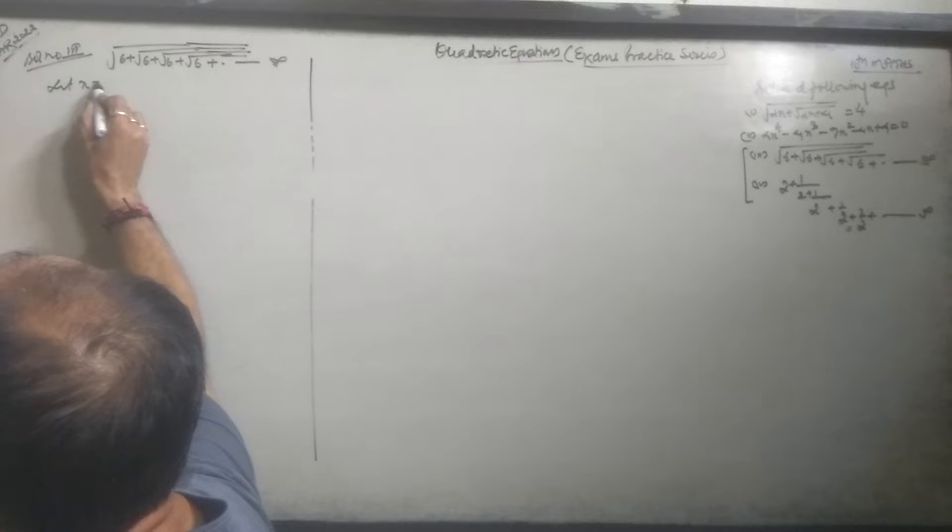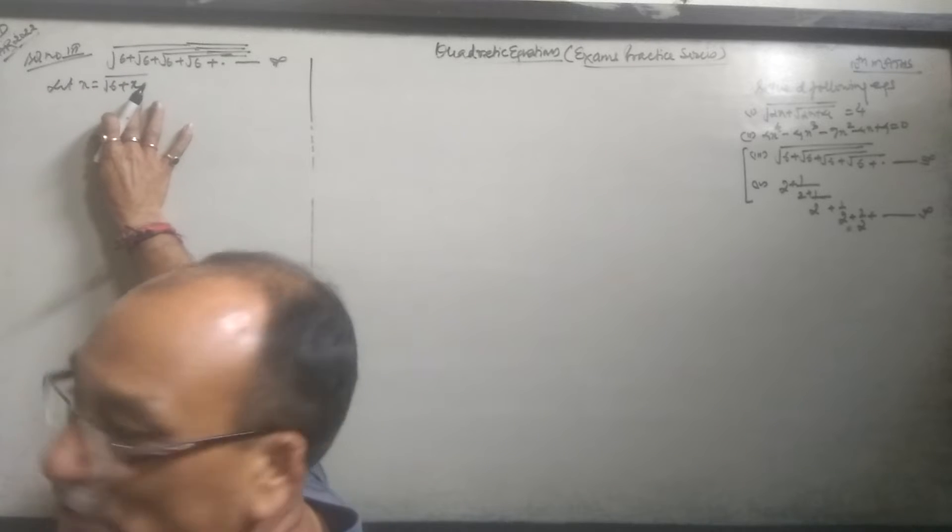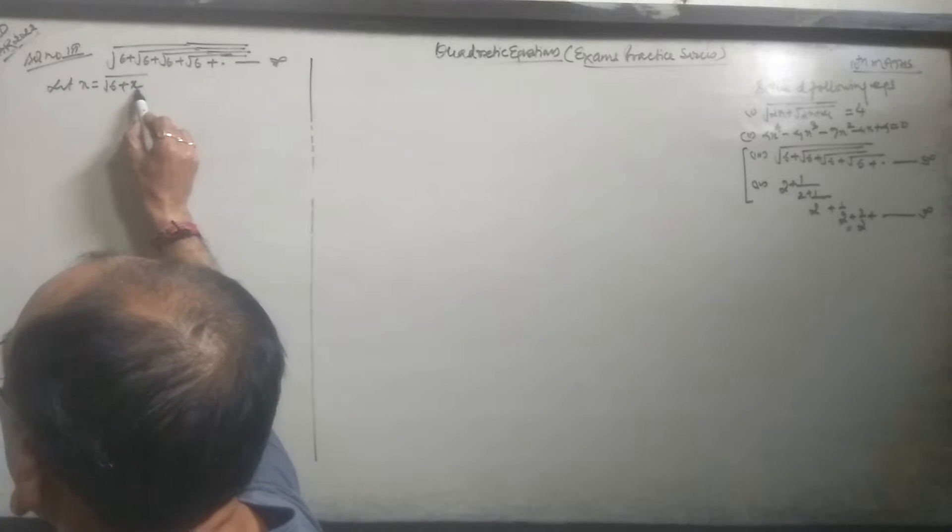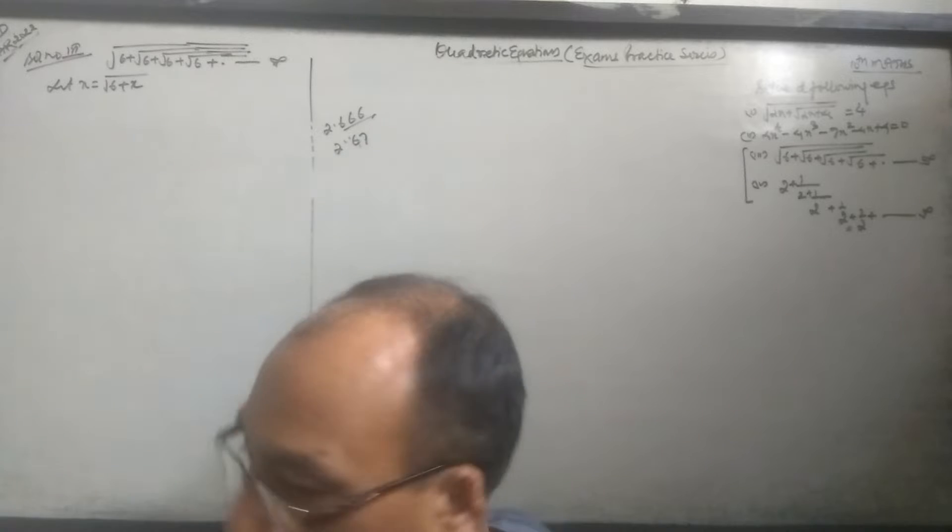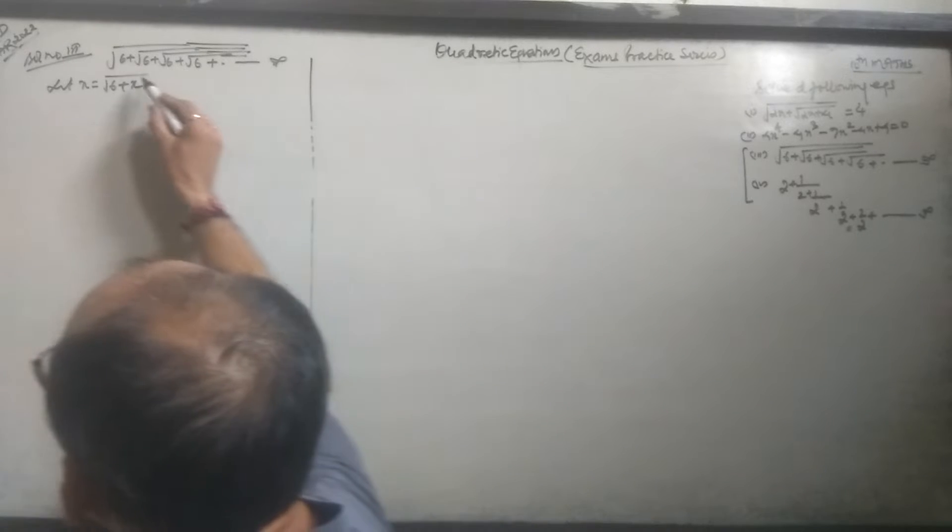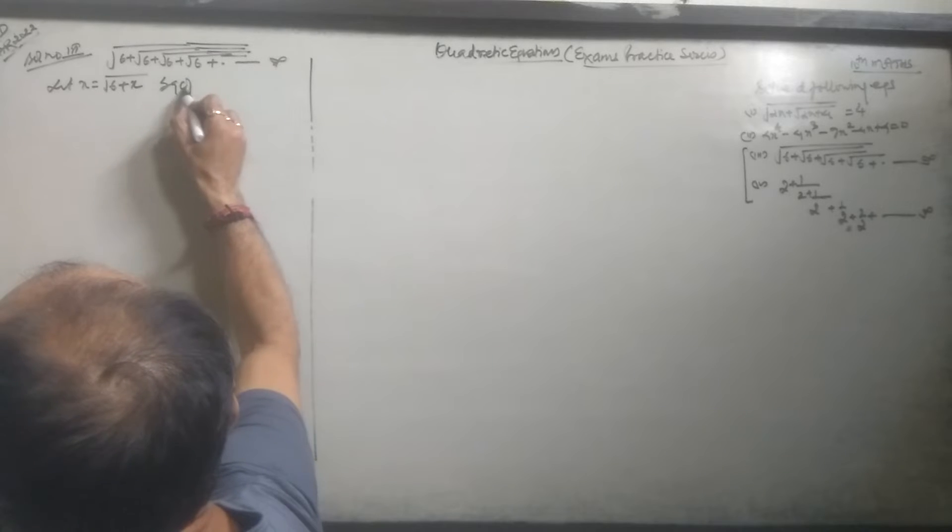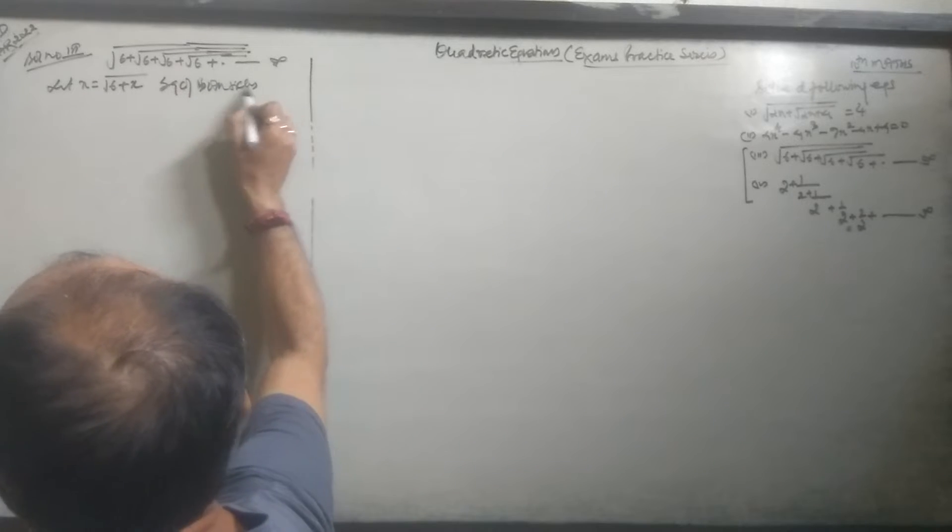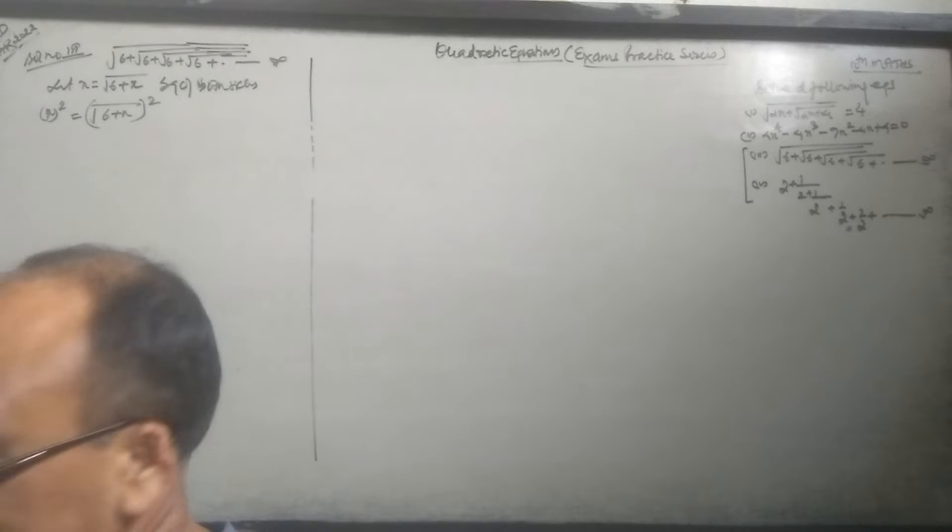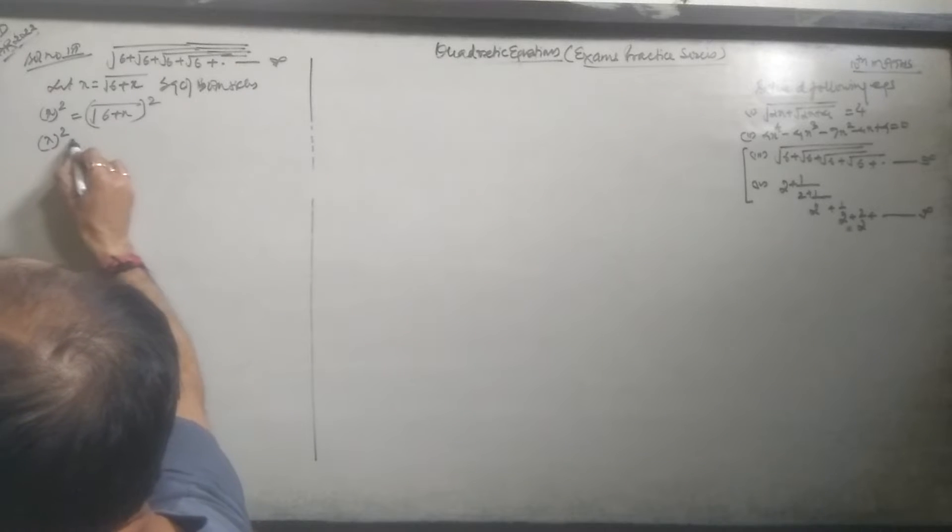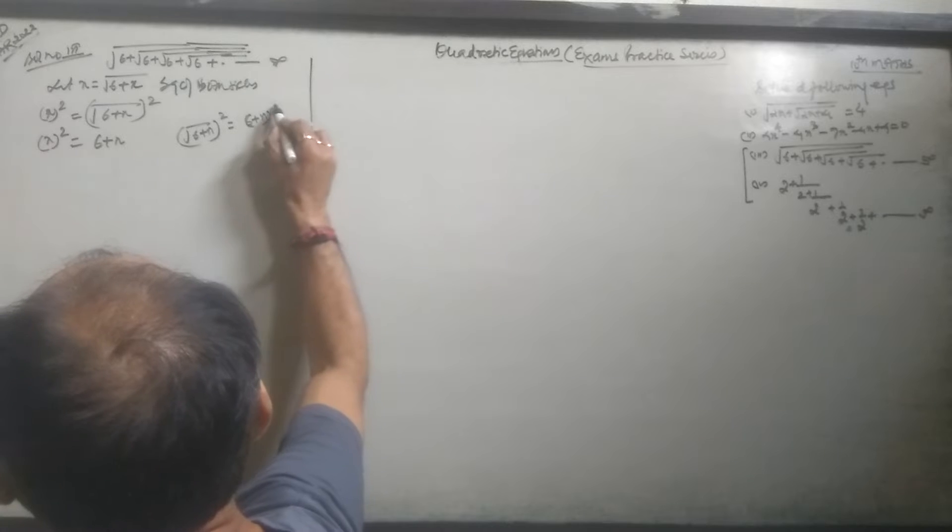Let X be the root, root of 6 plus... this number is repeating, so you have to take the same variable. Let X equal the root. X is equal to √(6 + X), because it's going to repeat. You have to take the same variable. X = √(6 + X).